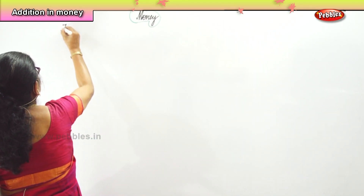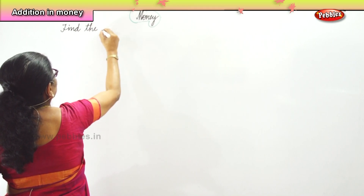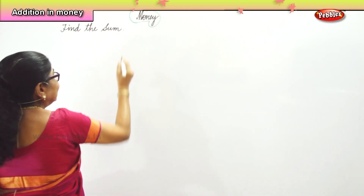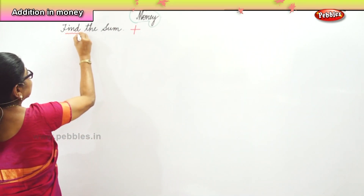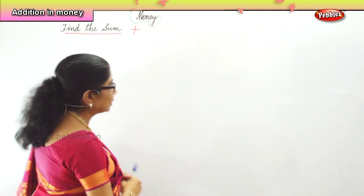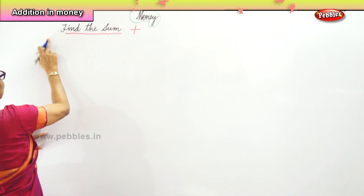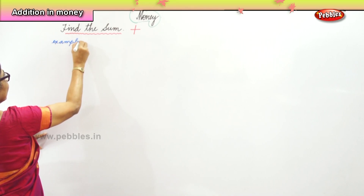When we say 'find the sum,' we mean addition. Now let's look at the first sum as an example. It says 75 rupees and 45 paise.